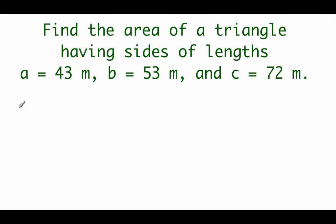Let's start off by finding that semi-perimeter, so we're going to add up our three sides of our triangle, so 43 plus 53 plus 72, and then split that in half. When we do that, we get a semi-perimeter of 84.